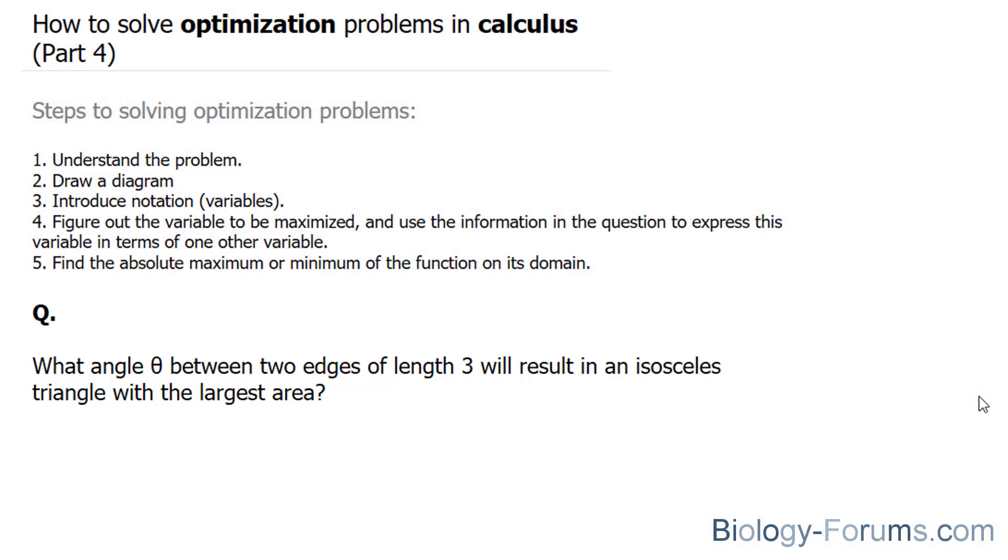In order to answer this question effectively, you'll need to know what isosceles means. An isosceles triangle is simply a triangle that has two sides of equal length, and the angles making up those two sides are also the same.